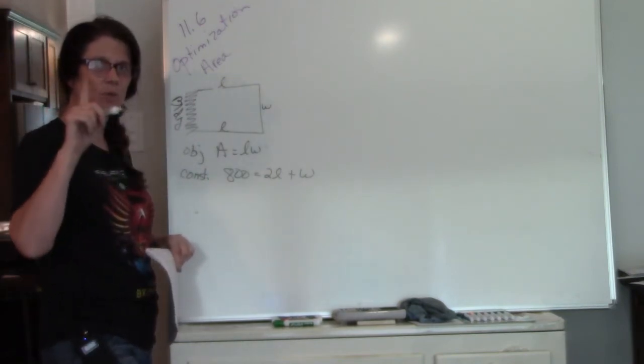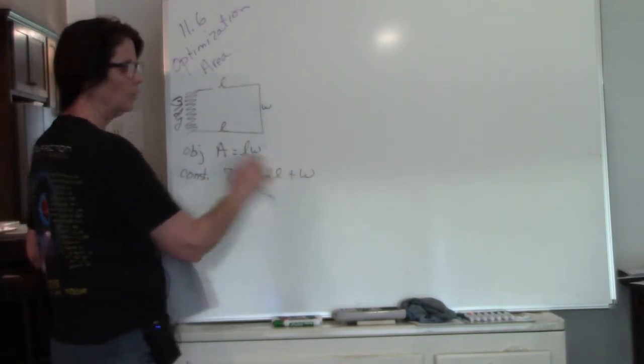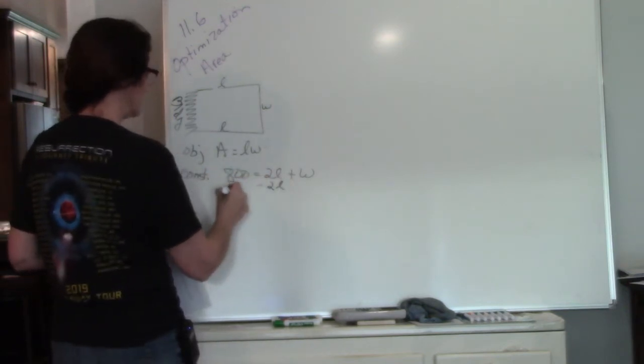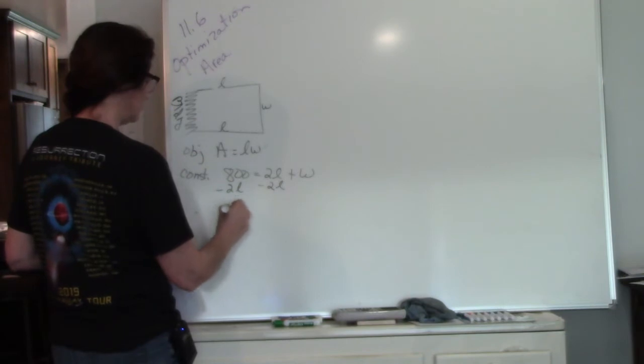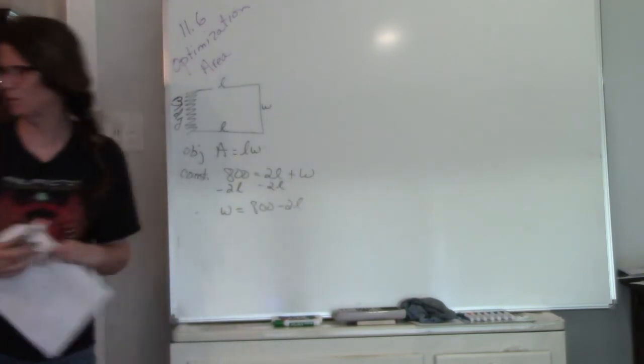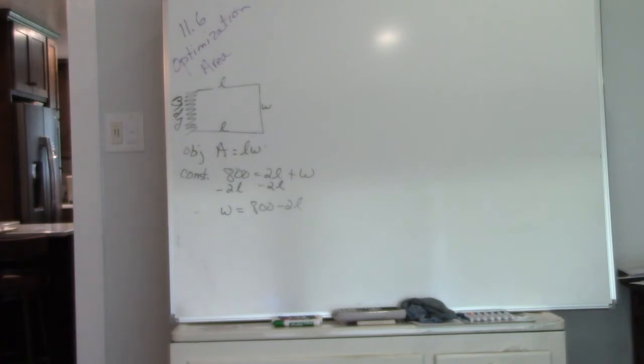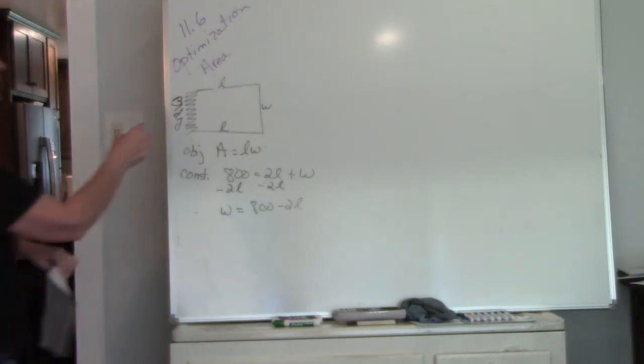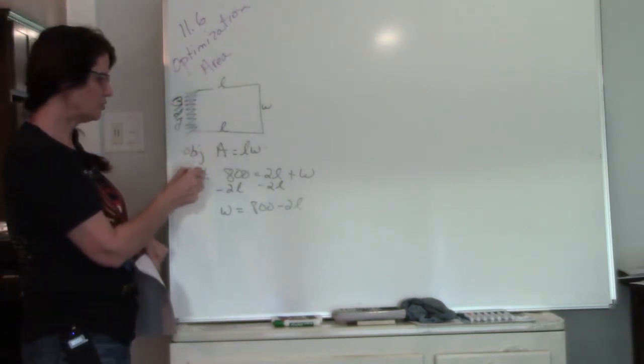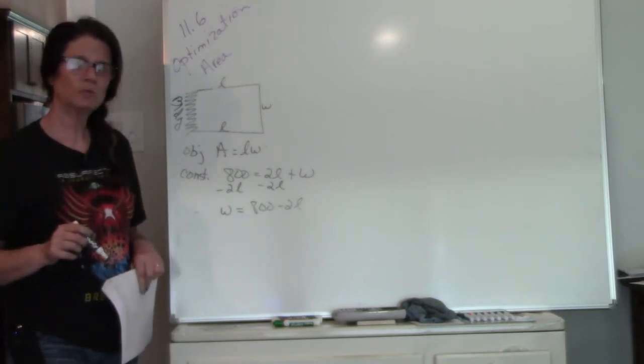Alright, so we have our objective, we have our constraint. Now we're going to solve our constraint for one variable. Well, this is already by itself, so all I'm going to do is subtract 2L from both sides and I have W equals 800 minus 2L.